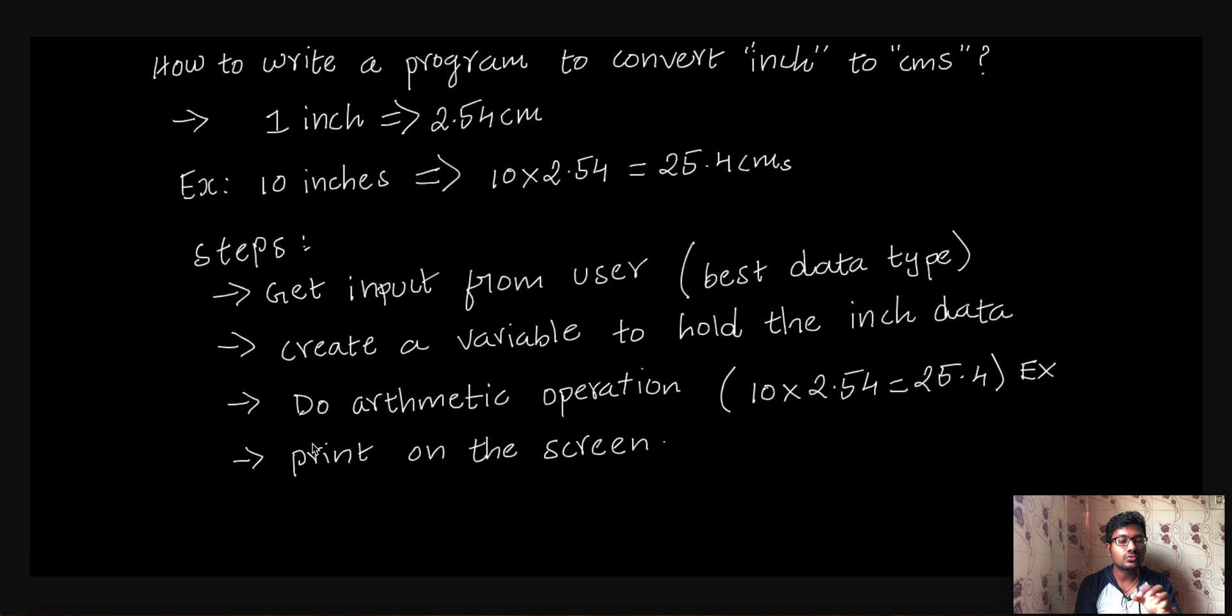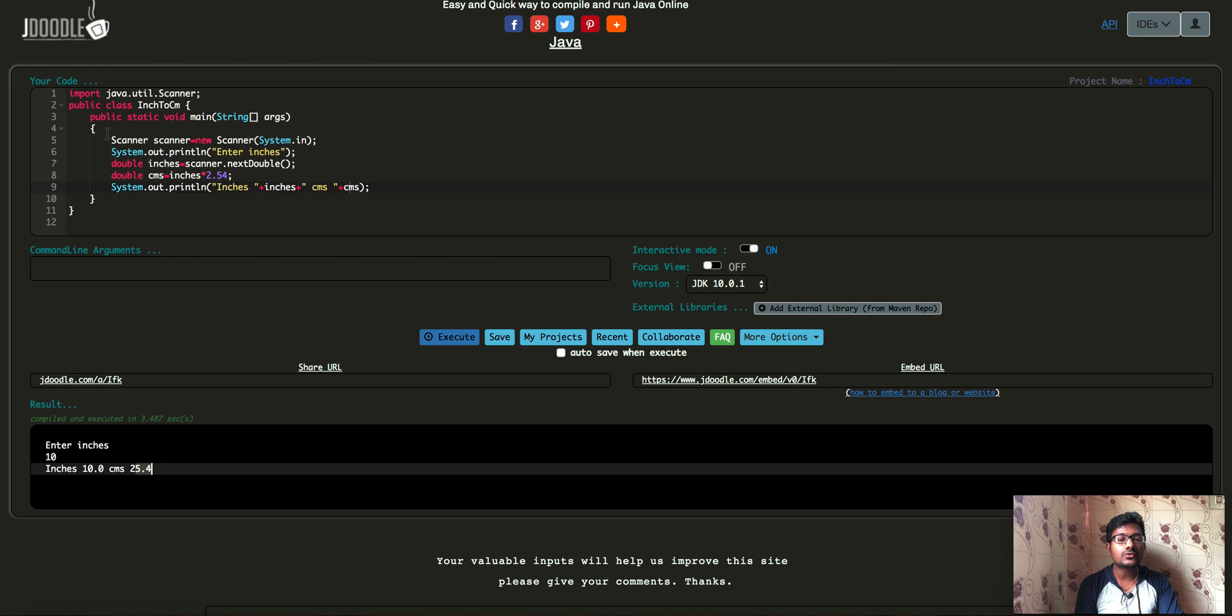And then we need to do the arithmetic operation. Arithmetic operation means user inch value into 2.54. And then we need to print on the screen. So these are the steps. And we are trying to replicate those steps using Java programming.